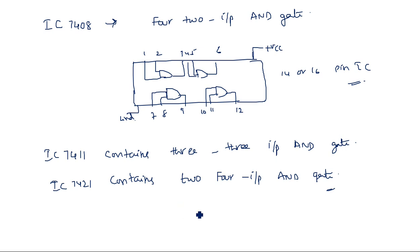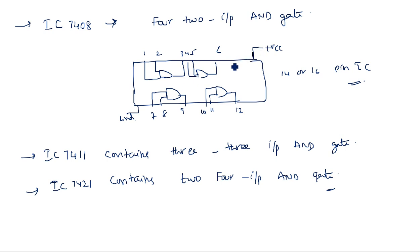As we go to newer versions of ICs, the number of inputs for the AND gates also increases — it is 08, then 11, and then 21. This is about AND gates and their operational realizations using diodes as well as transistors. Thank you.